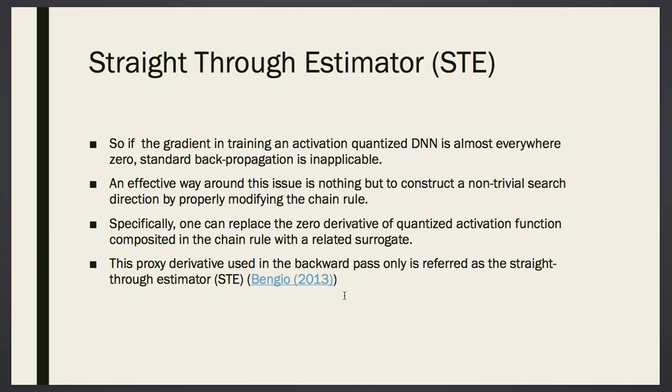Well, there is an effective way to go around this issue, actually. We construct a non-trivial direction to properly modify the chain rule. What I'm trying to say is, actually, your gradient is like a search in the parameter space.